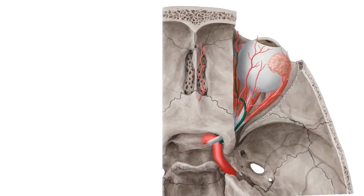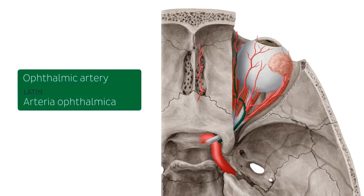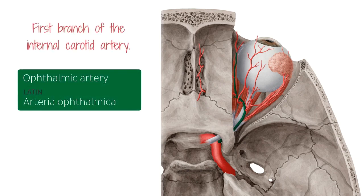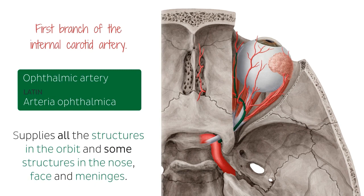The next one that we're going to be talking about, that you see here highlighted in green, is the ophthalmic artery. The ophthalmic artery is the first branch of the internal carotid artery, that artery that we saw on the previous slide. Keep in mind that right now we're looking at a superior view of the orbit where we cut the skull in a way to expose this area of your body. Here you see the superior view of the ophthalmic artery. Branches of the ophthalmic artery will be supplying all the structures in the orbit as well as some structures in the nose, face, and meninges.